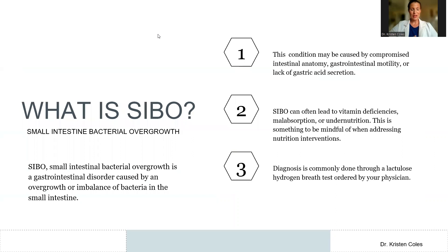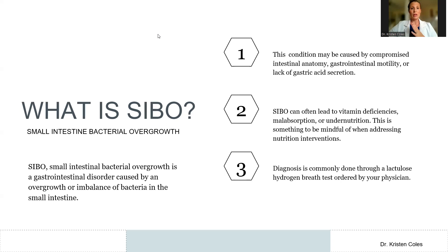Let's start briefly with a little bit of information about what SIBO is. SIBO stands for small intestine bacterial overgrowth, and essentially this is a condition where bacteria have gained access into the small intestine where they should not be located — it's an improper overgrowth of bacteria there. The majority of our bacteria or microbiome should be located in the large intestine, which is a different organ.